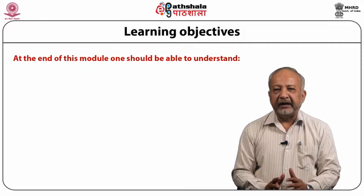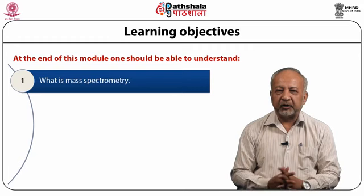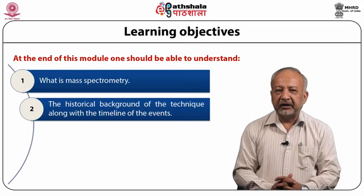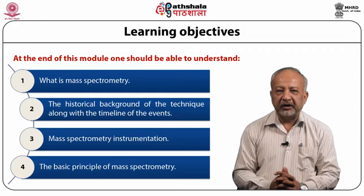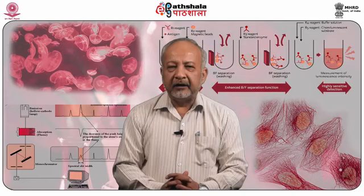The objective of the module is that at the end of this module one should be able to understand what is mass spectrometry, the historical background of the technique along with the timeline of events, the mass spectrometry instrumentation and the basic principle of mass spectrometry with the terms and definitions related to mass spectrometry techniques.